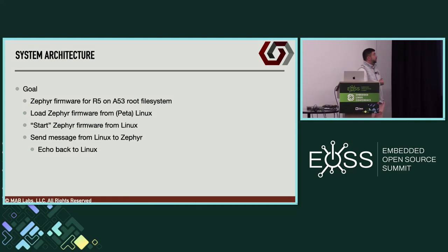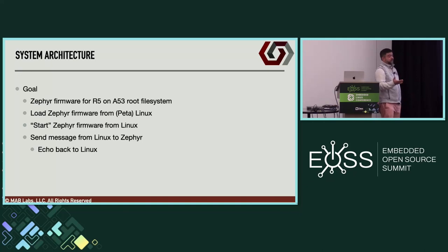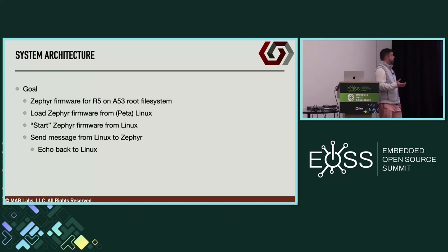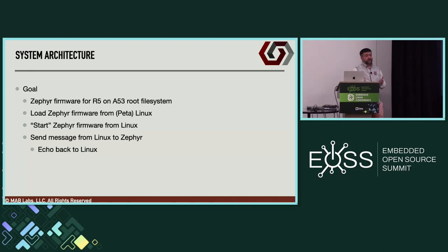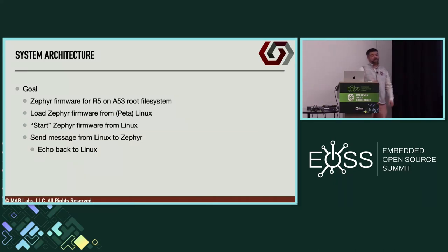The goal is to create a Zephyr binary targeted for the R5, resident on the A53 root filesystem. We load the firmware from the PetaLinux side, start it, send a message from Linux to Zephyr, and the expectation is that we should get that message back on the Linux side — a basic echo test.